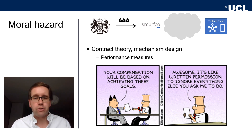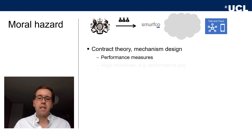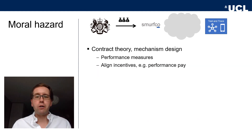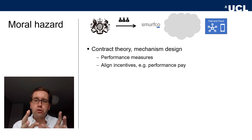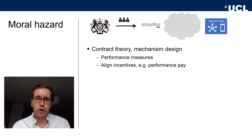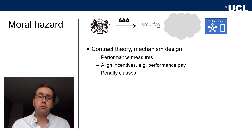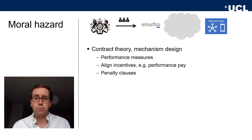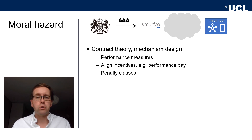What's the problem with that? It's nicely summarized in a Dilbert cartoon. The boss says, "Your compensation will be based on achieving these goals," and the employee says, "Awesome — it's like written permission to ignore everything else you ask me to do." So specifying exactly what you want agents to do is really, really difficult. We can think about mechanisms to align incentives — for example, giving salespeople a share of sales. Performance pay and bonuses help, as do penalty clauses for not completing certain tasks, which every government should include in every outsourced contract.